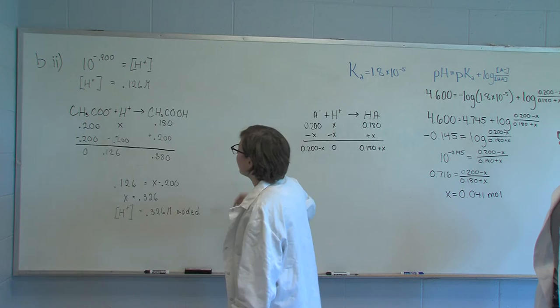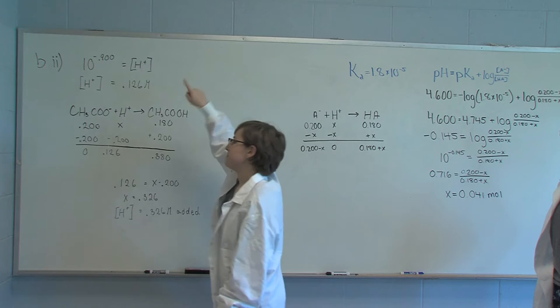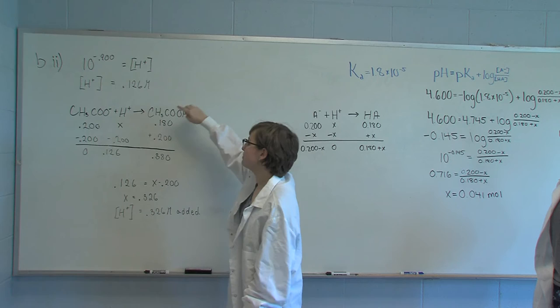When we do 10 raised to the negative .900, which was the pH we want to find, we get the concentration of H plus that needs to be left at the end is .126 molar.